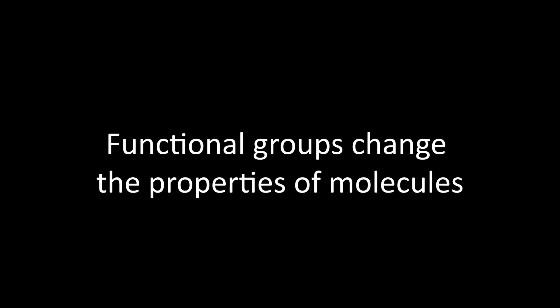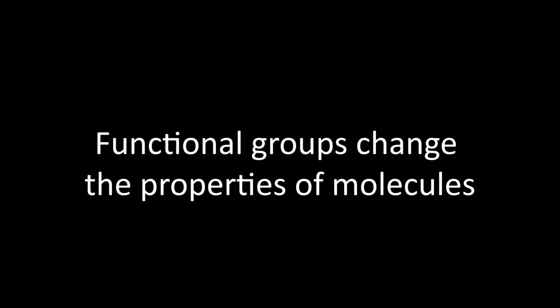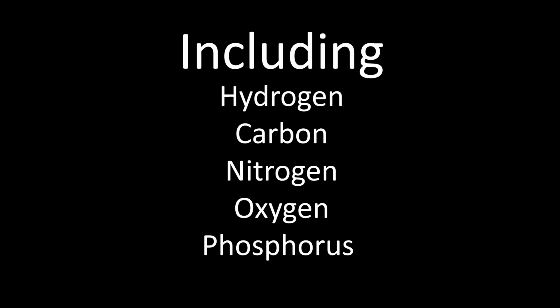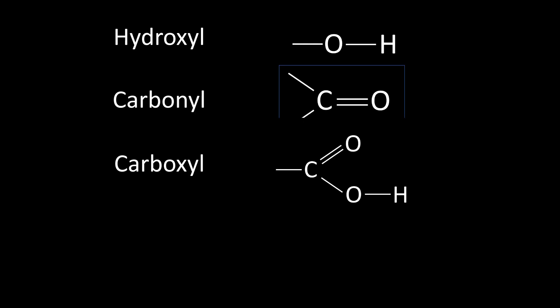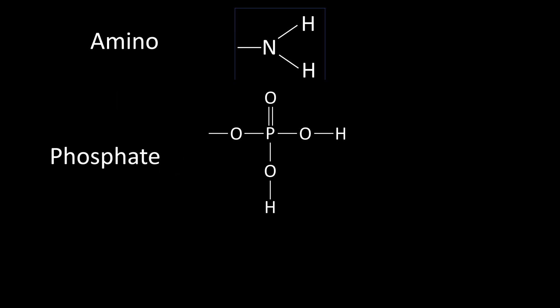Another reason why there are so many carbon compounds is because of something called a functional group. Functional groups are very important because they change the chemical properties of molecules. They are specific elements added to a molecule, and each functional group will function basically the same way regardless of which molecule it is attached to. For our purposes, we only need to know 6: hydroxyl, carbonyl, carboxyl, amino, phosphate, and methyl.